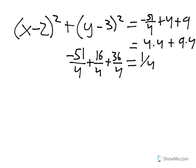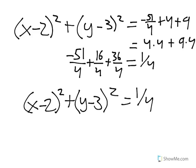Simplify your equation. Rewrite your equation so you can easily identify the h and the k and the r. From here we can see that h equals 2, k equals 3, and r squared equals 1 fourth.